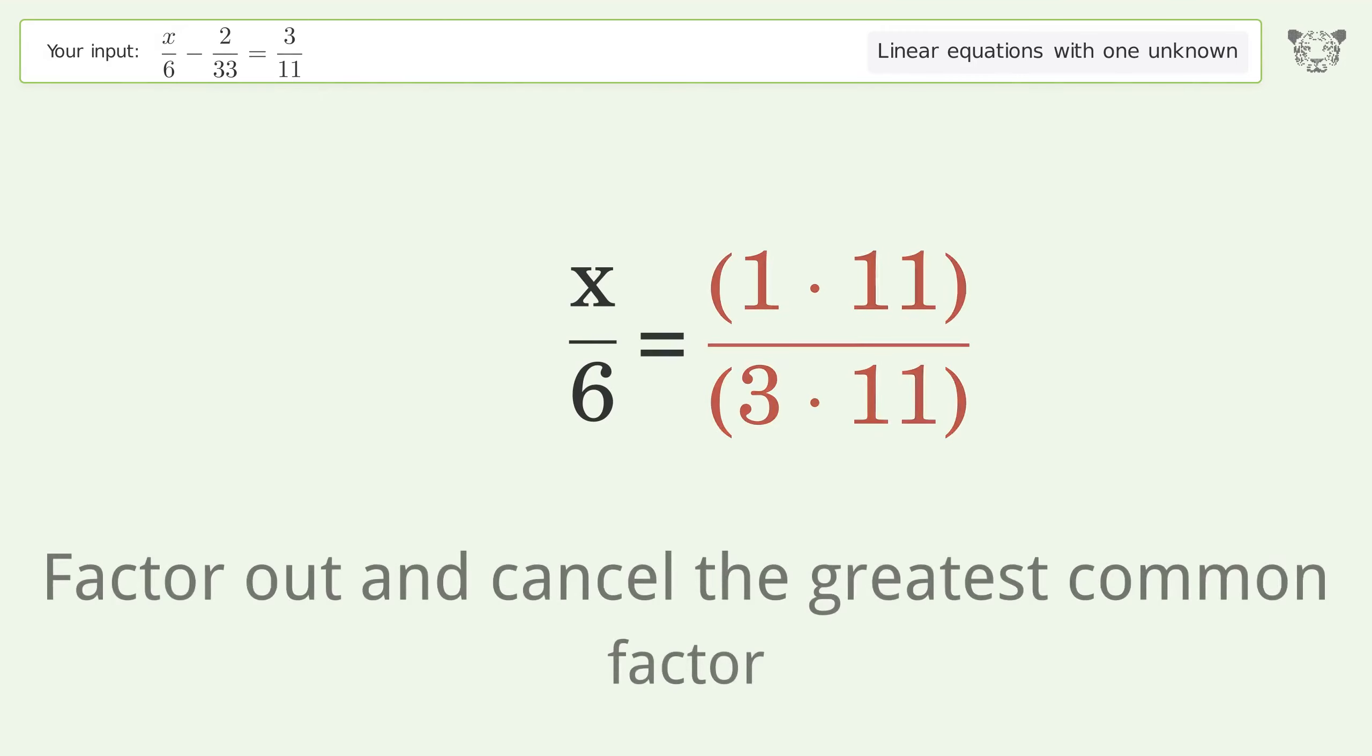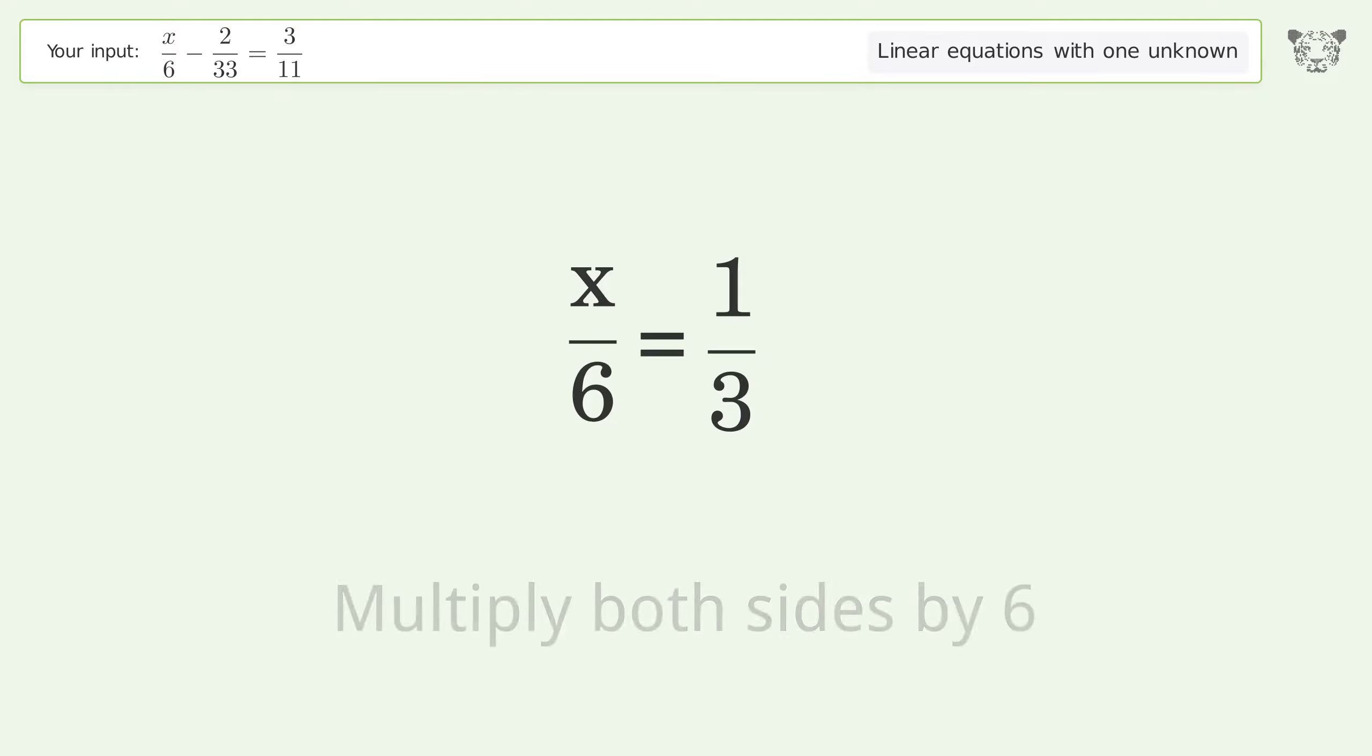Find the greatest common factor of the numerator. Factor out and cancel the greatest common factor.